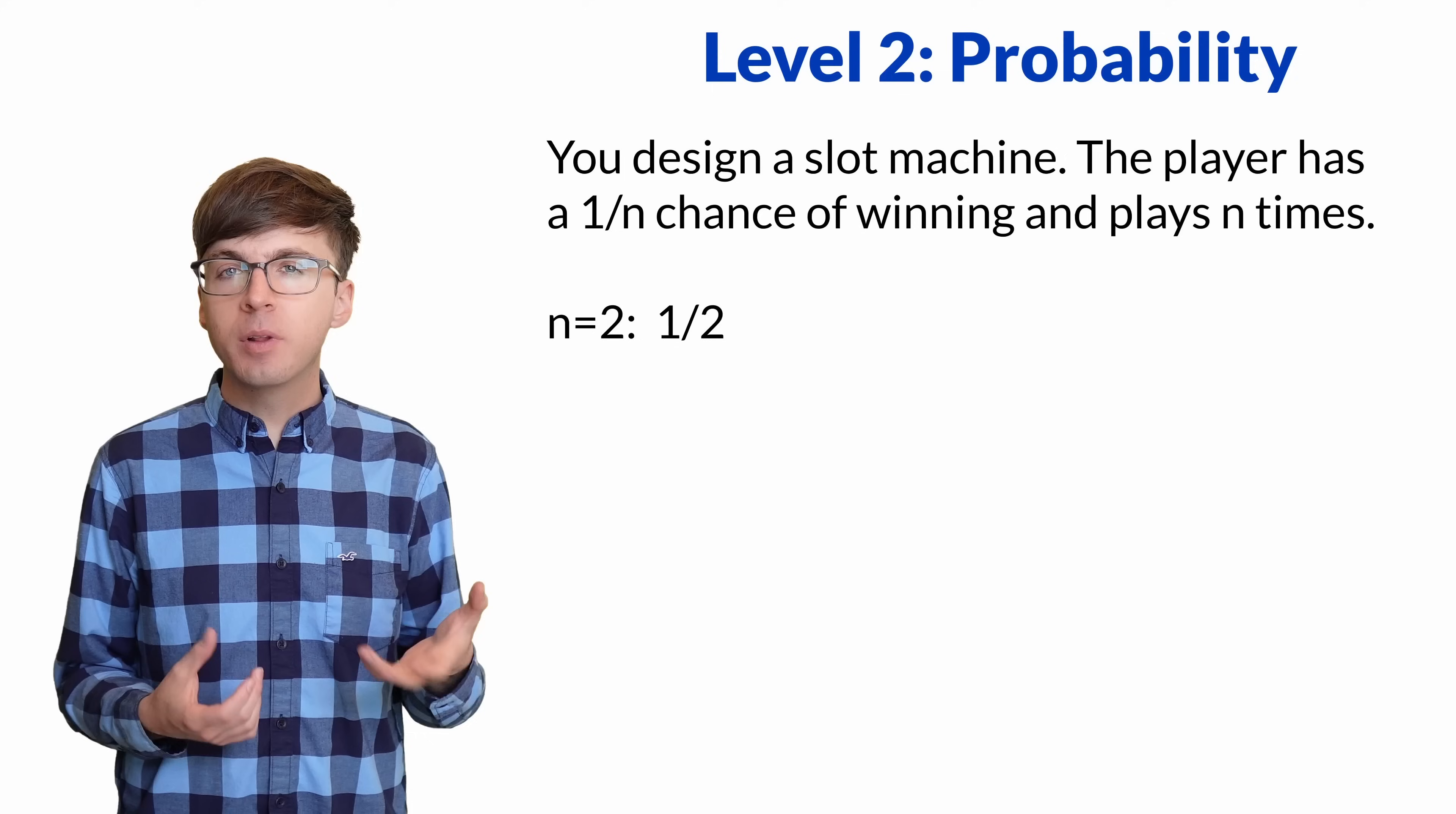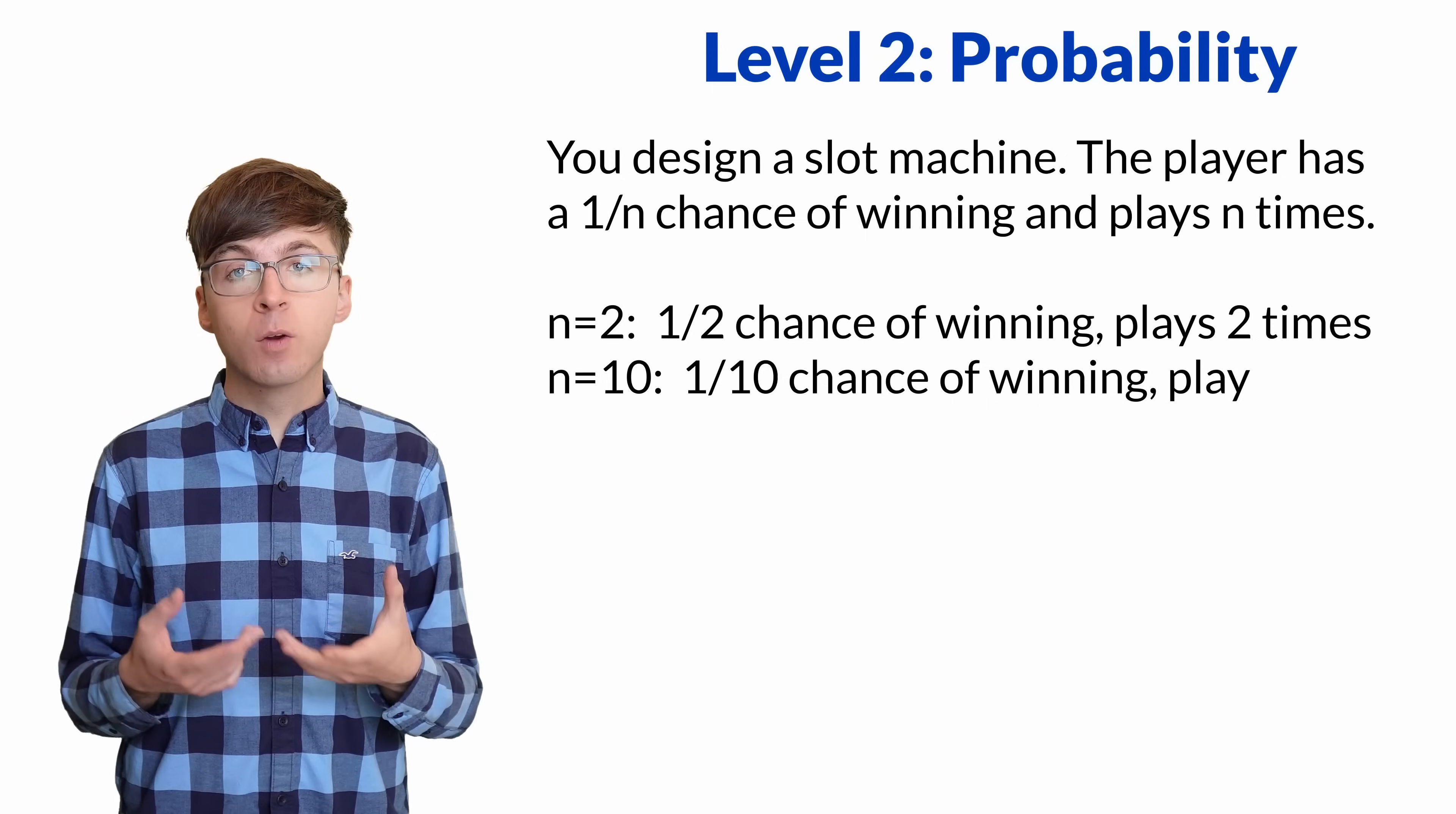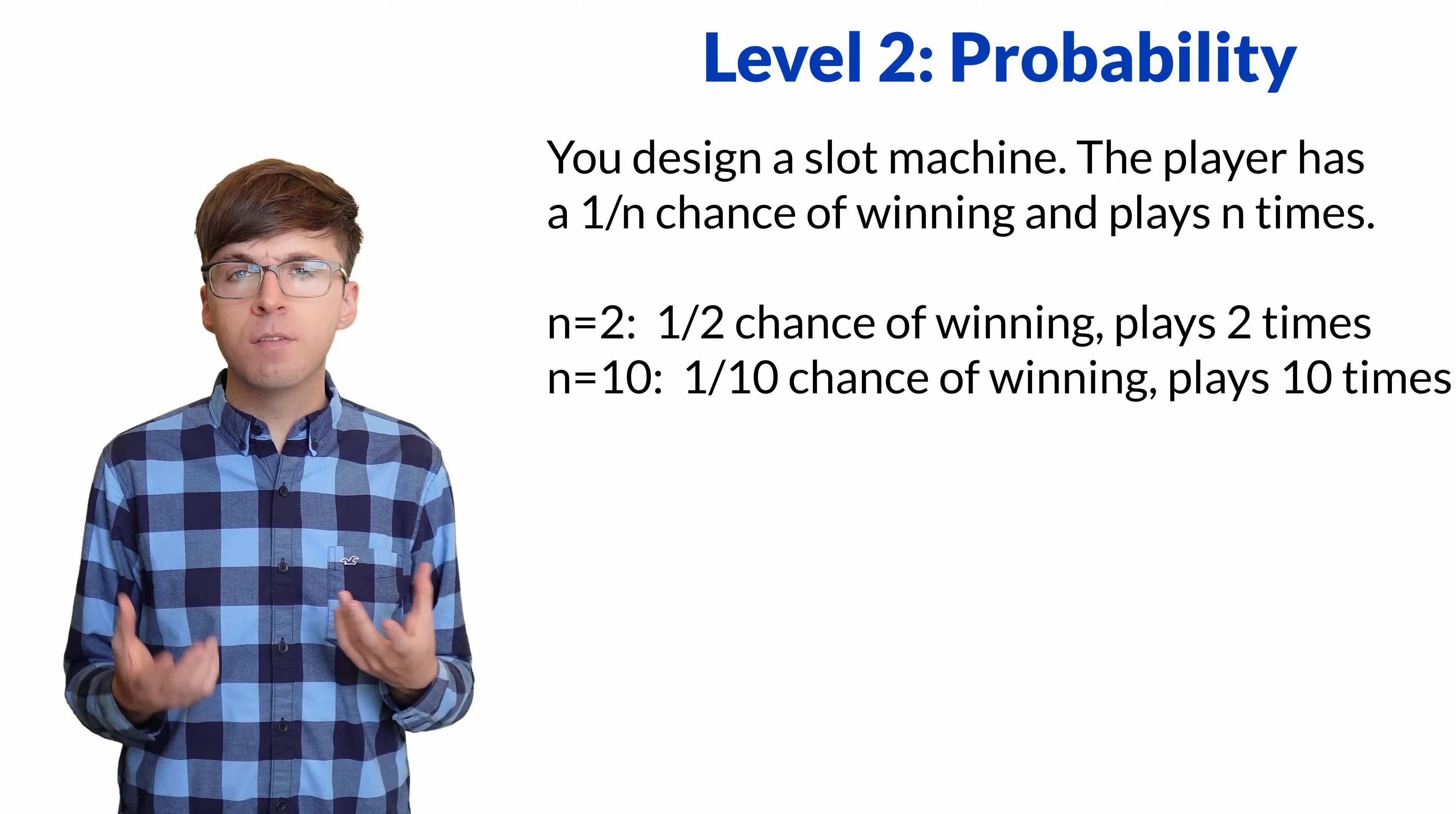If n equals 2, the player wins half the time, but only gets to play twice. If n equals 10, the probability of winning is 1 out of 10, but the player will play 10 times. This way, the player wins on average one time, no matter what the value of n is.